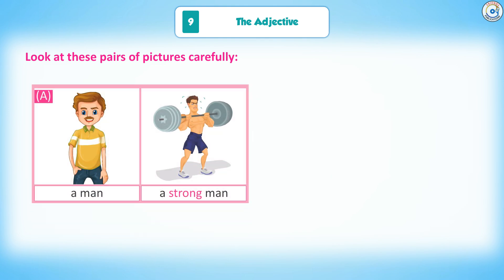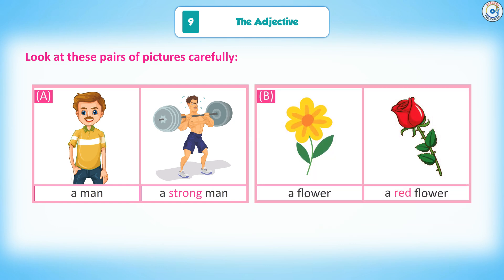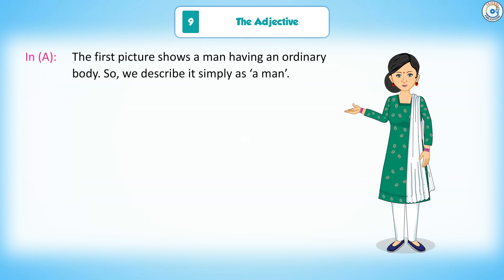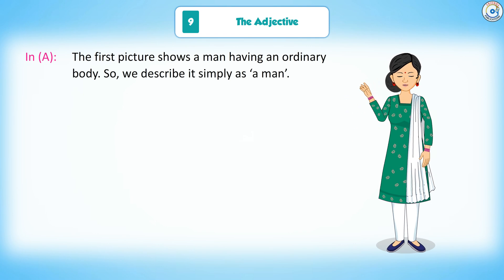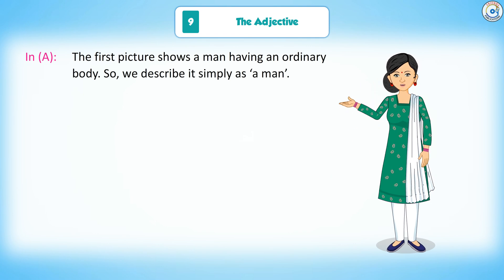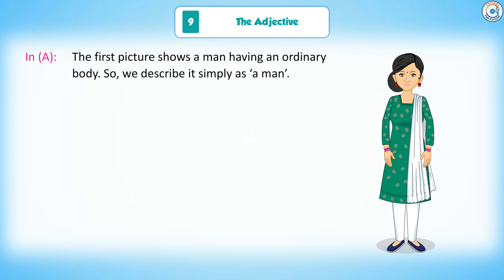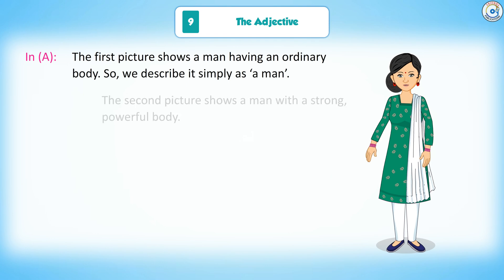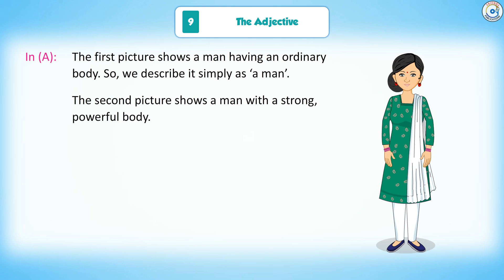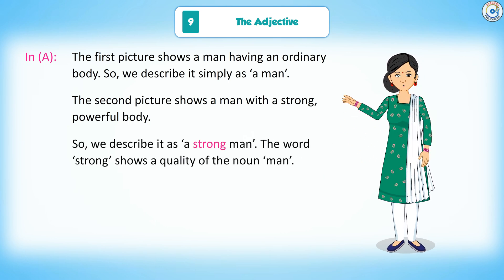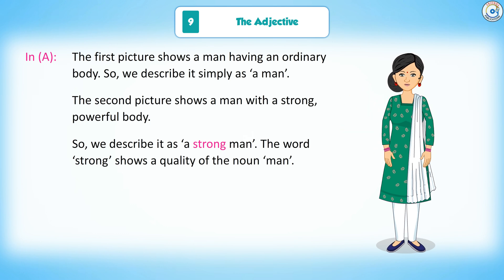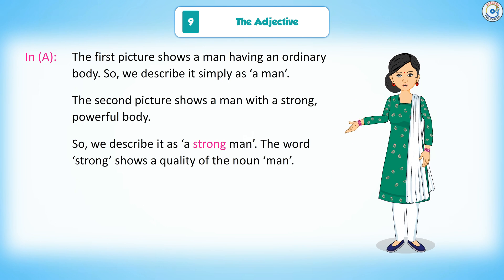In picture pair A, the first picture shows a man having an ordinary body, so we describe it simply as 'a man.' The second picture shows a man with a strong, powerful body, so we describe it as 'a strong man.' The word 'strong' shows a quality of the noun 'man.'